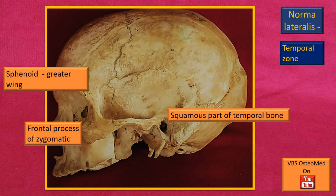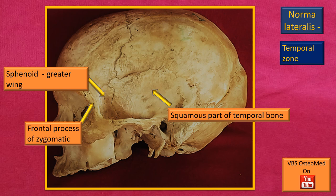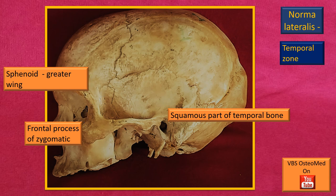It is time to identify a few important bones, indicated by three flashing arrows: the greater wing of the sphenoid, the frontal process of the zygomatic bone, and the squamous part of the temporal bone. The frontal process of the zygomatic bone forms the anterior boundary of the temporal fossa, while the greater wing of the sphenoid and the squamous part of the temporal roughly form the floor.